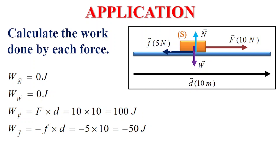So the work done by friction. On the other hand, work done by friction: it is friction times distance, but there is a minus because friction opposes motion. So minus friction, 5 times distance 10, equals negative 50 joules. If the work is positive, the work is said to be motive. If the work is negative, it is said to be resistive.